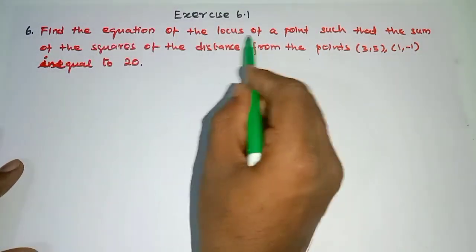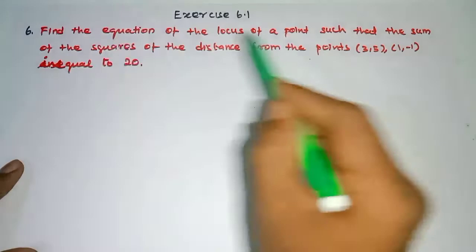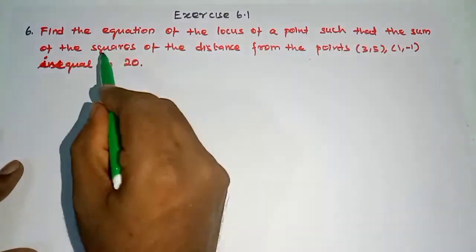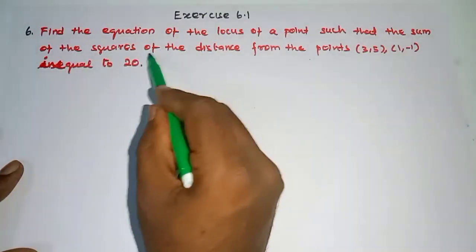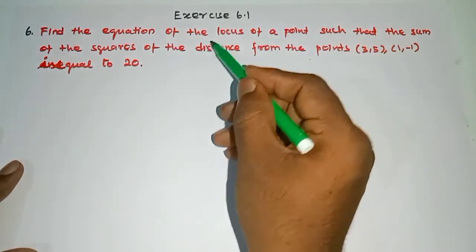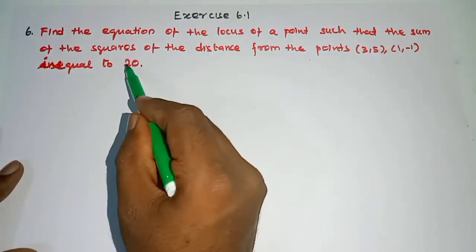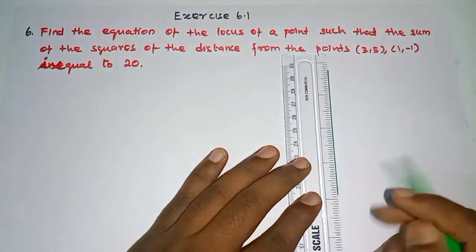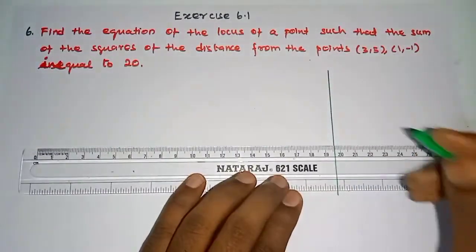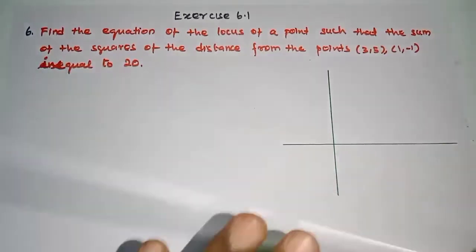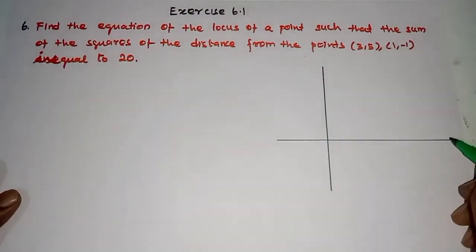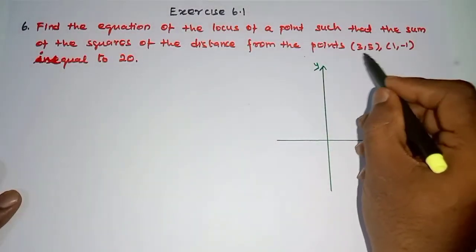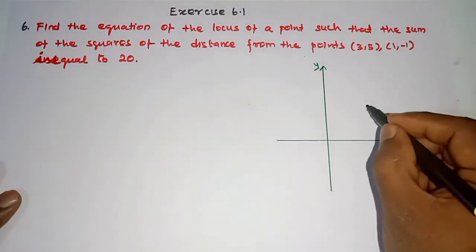In the locus point equation, find two points — they are given. In the two points values we can see sum and square, square and add equal to 20. So first we can do a plot so we can understand better. I should mention the axis first — this is the X-axis and this is the Y-axis. First point is (3, 5), so somewhere at 3 and 5 I will put here. Second point is (1, -1), I will put here.